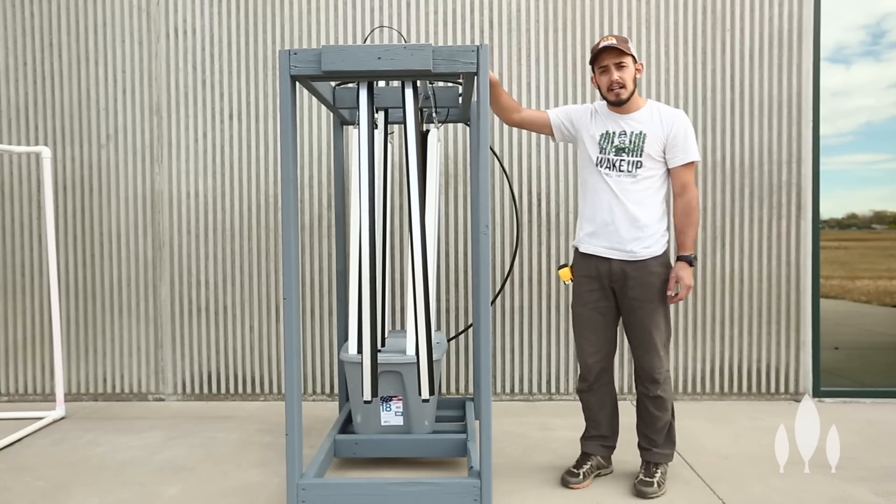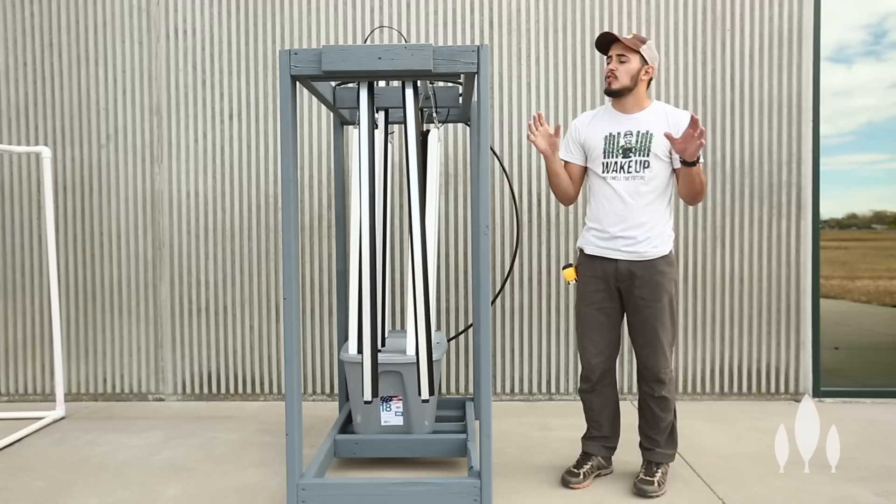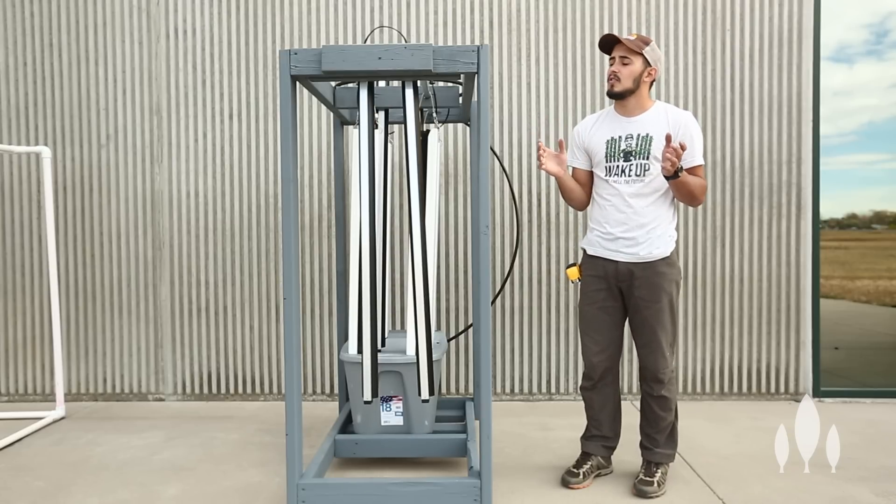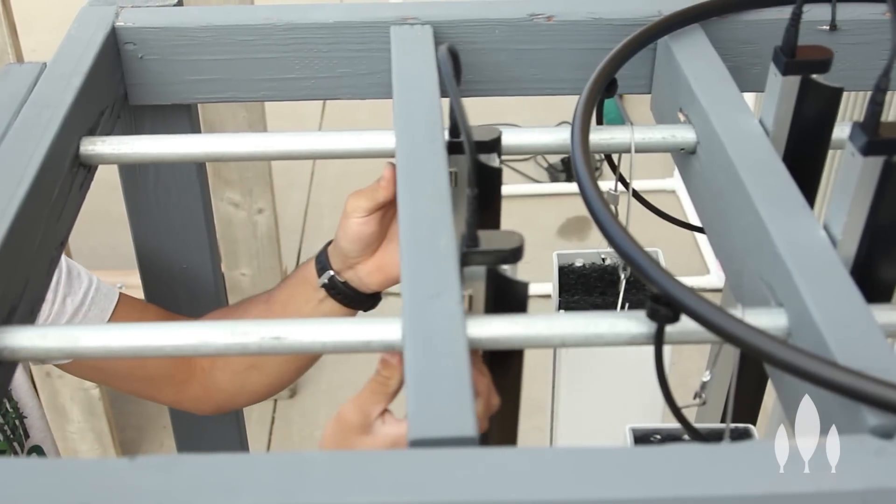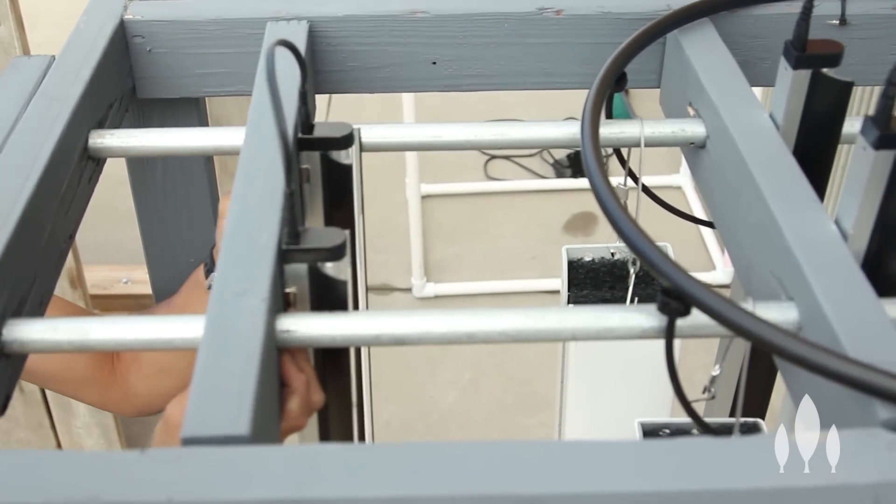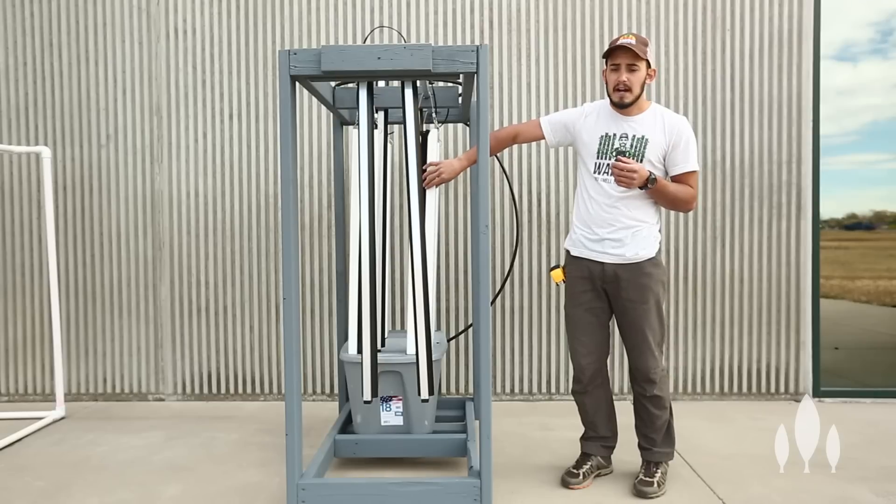And then we've added two bars on the inside of here that we're hanging our lights off of. We've just drilled some holes in two by fours and that allows us to mount our lights to that two by four partition and be able to move our lights back and forth.